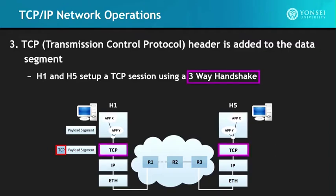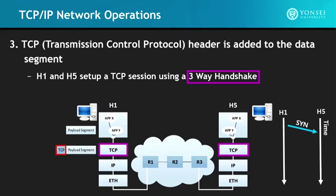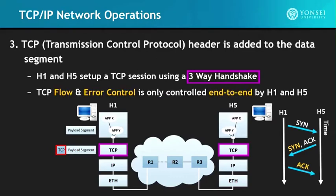The three-way handshake is based upon the TCP units of H1 and H5: H1 sends a SYN message to H5, which represents 'let's synchronize.' Then H5 acknowledges the synchronization and sends back its own SYN message. Then H1 acknowledges that synchronization by sending back an acknowledgement. The TCP flow and error control is only controlled by end-to-end H1 and H5 devices — it is not controlled by the routers in between.